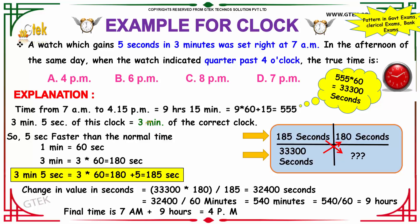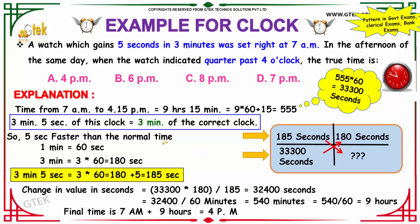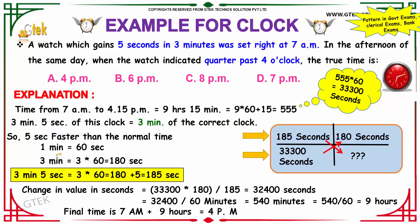3 minutes and 5 seconds of this clock equals 3 minutes of the correct clock — the clock is running ahead by 5 seconds. 3 minutes = 180 seconds, so if the clock runs 3 minutes 5 seconds (185 seconds) when the correct time is 180 seconds, our correct time is 180 seconds whereas our clock is running at 185 seconds.